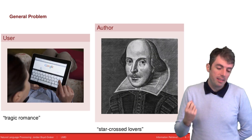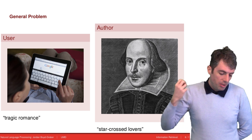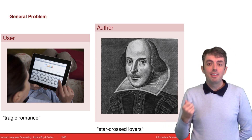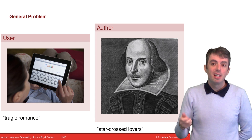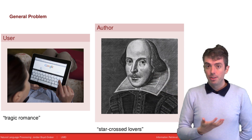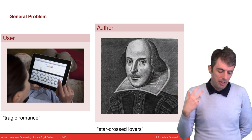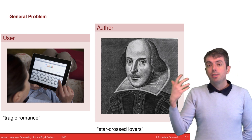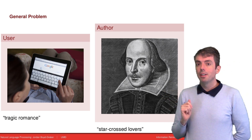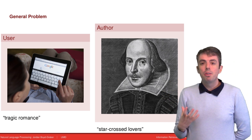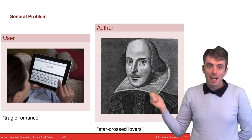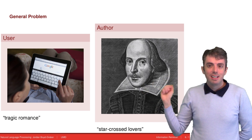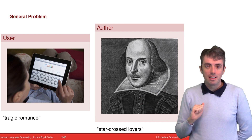The general problem is that users will create queries that don't necessarily have the same terms as what's in the original documents. For example, the user might type in 'tragic romance,' while Shakespeare might have written 'star-crossed lovers.' How do you find that query in the correct document?